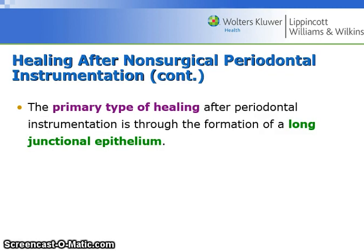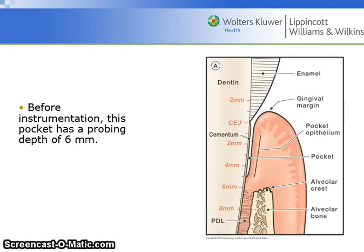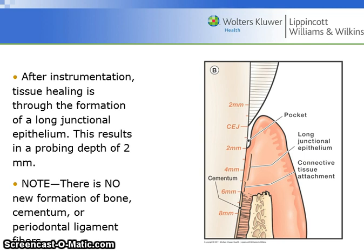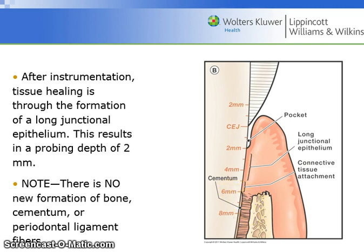The primary type of healing after periodontal instrumentation is through the formation of a long junctional epithelium. Before instrumentation, this pocket has a probing depth of six millimeters. After instrumentation, tissue healing through the formation of a long junctional epithelium results in a probing depth of two millimeters. Note there is no new formation of bone, cementum, or PDL fibers; however, the junctional epithelium has become larger, thus closing off the opening for bacteria to continue to infect the bone.